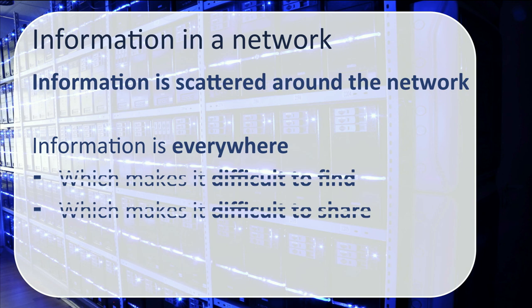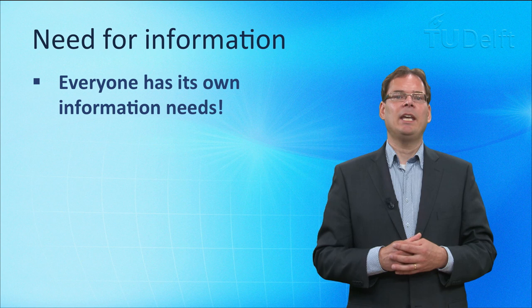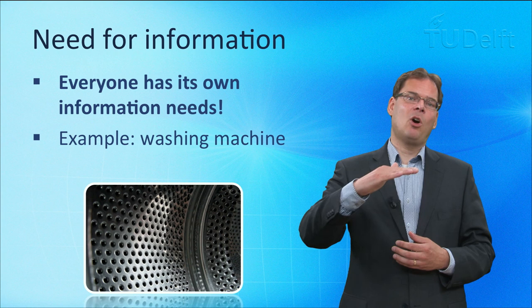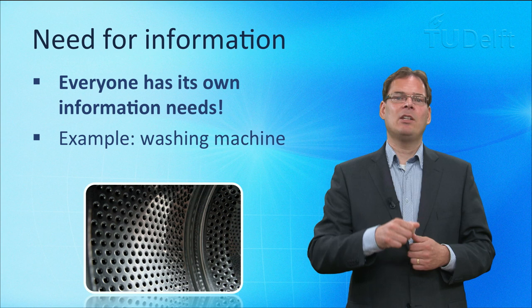Nevertheless, most value is created when information sources are combined. For example, the supply and demand needs to be balanced to avoid overcapacity in a smart grid. For this purpose, various organizations need to cooperate and exchange information with each other. Only by having the right information can this be accomplished. Each actor has its own need for information. The information you need could be the price of electricity, to ensure that your washing machine might only start when the price is below a certain threshold. This means that information should be shared and interpreted, and the possibilities for an automatic start should be implemented in the washing machine.